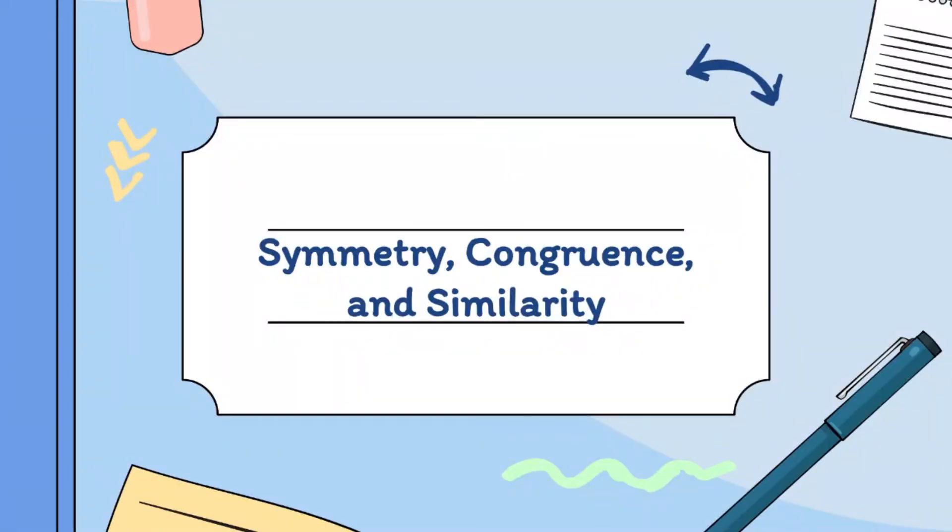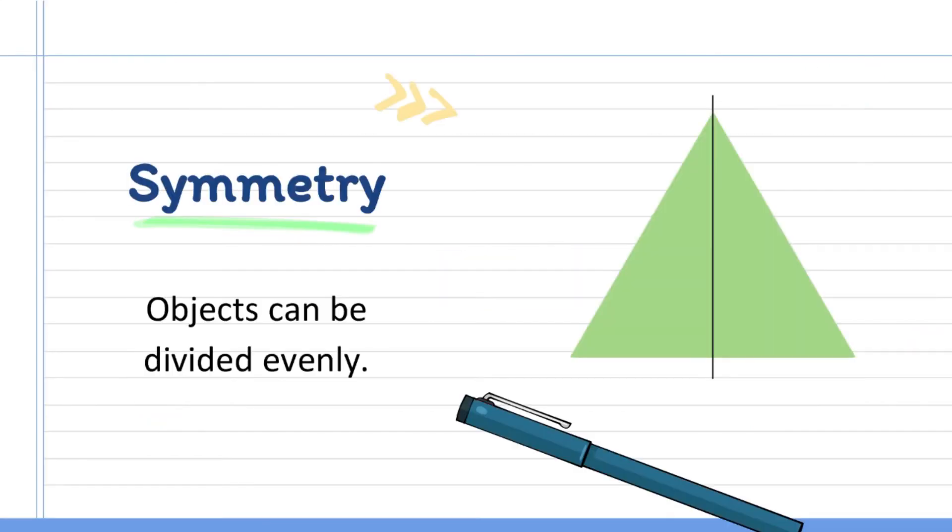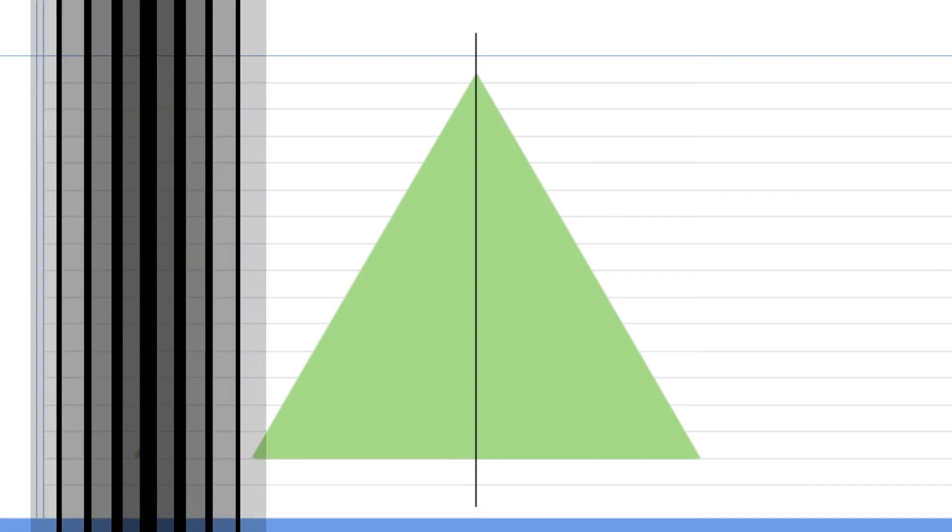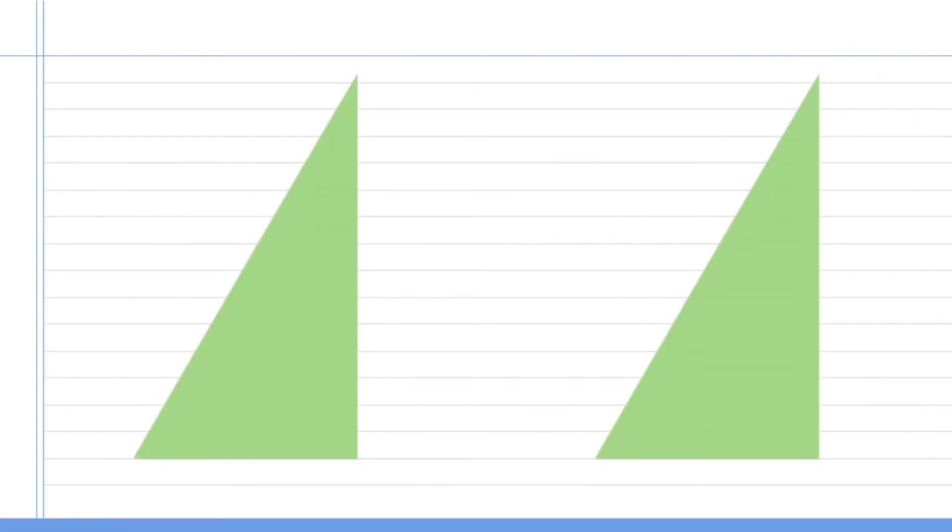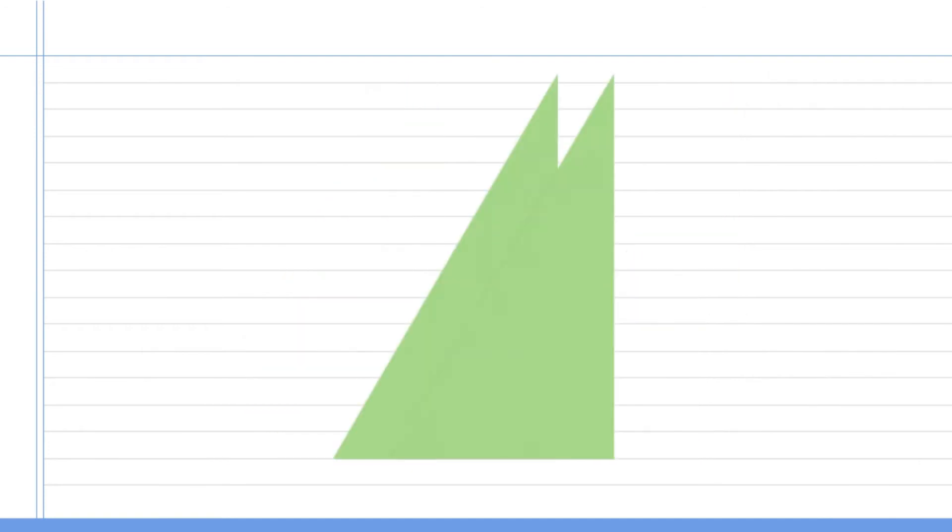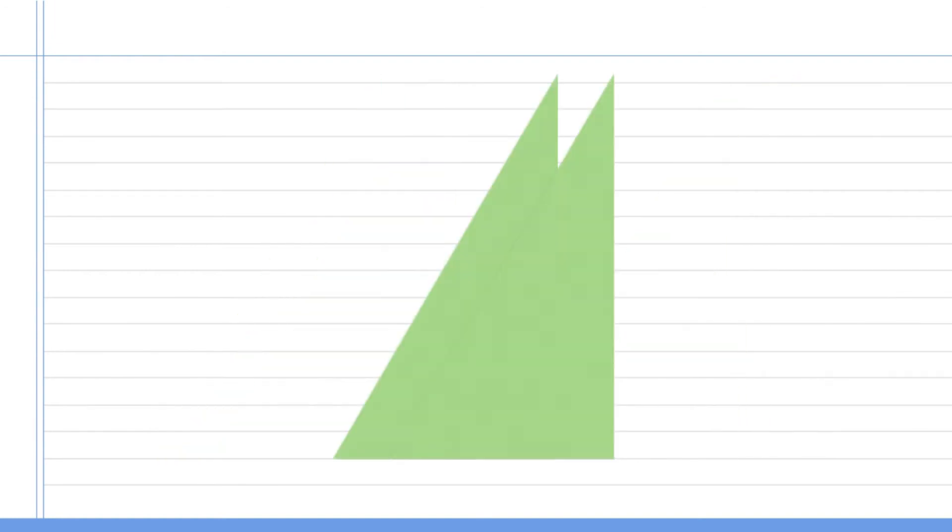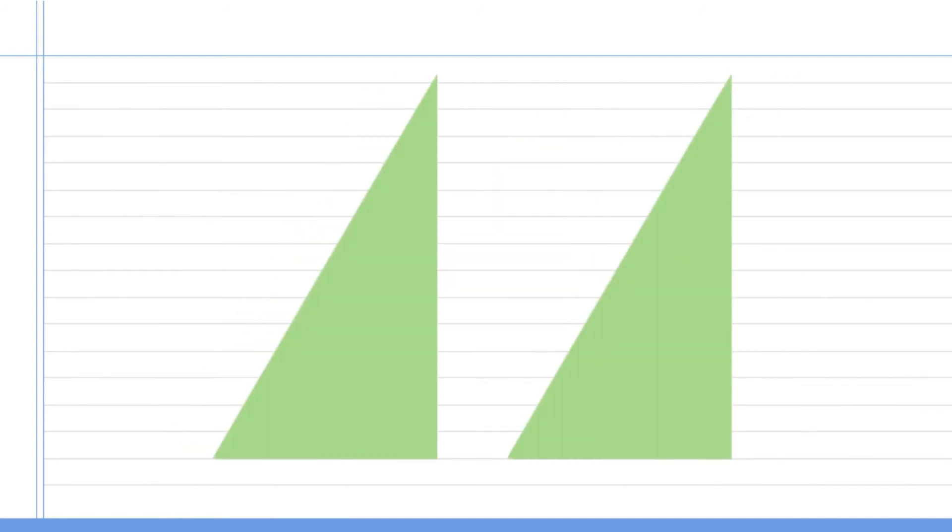Good day everyone. Today we will be talking about symmetry, congruent, and similarity. By the end of this lesson I want you to be able to know the difference between the meaning of these terms. First, let us talk about symmetry. Symmetry is when you have an object that could be divided into 2 equal parts where both sides look exactly the same. For example, this triangle. When we cut this in half, we will have a right triangle, and it looks exactly the same. They also have the same size and the same shape.